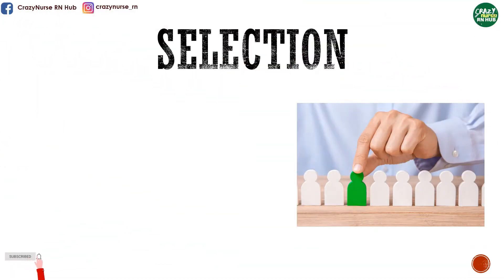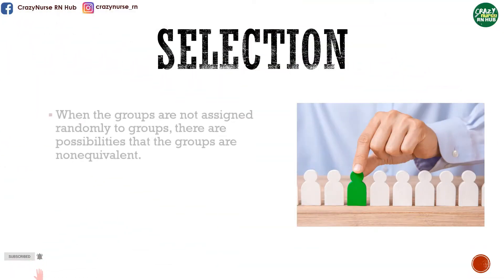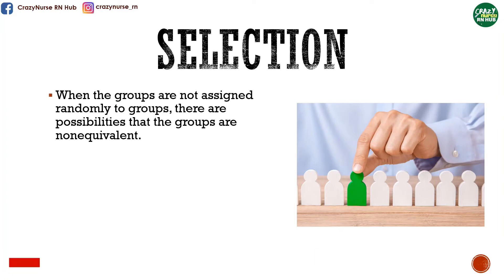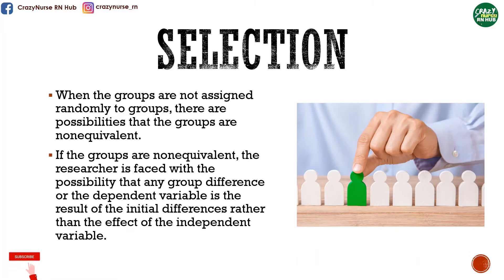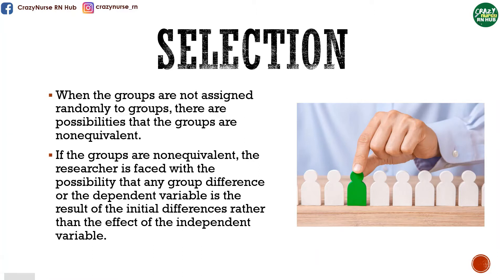Next is selection. When the groups are not assigned randomly, there are possibilities that the groups are non-equivalent. If the groups are non-equivalent, the researcher is faced with the possibility that any group difference on the dependent variable is the result of initial differences rather than the effect of the independent variable.